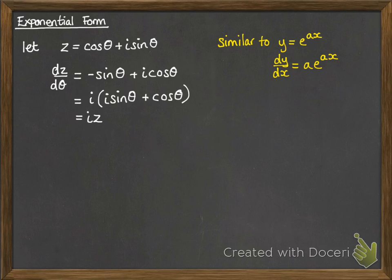Well, this is similar to the exponential function. If you do y equals e to the ax, then you differentiate it, you get a multiple of what you started with. It's ae to the ax, which you could rewrite as being a y.